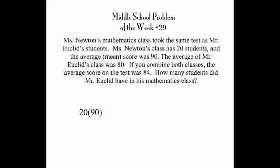When averages are concerned, while it's unlikely that all the scores would be the same, we know that if the average is 90 then the total of all the scores added up is the number of scores times 90 — shown here for the first class: 20 times 90. The other class, which had an average of 80, would be 80 times the number of students in that class.